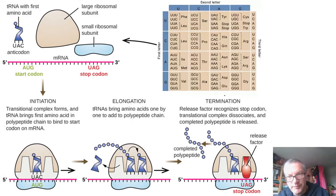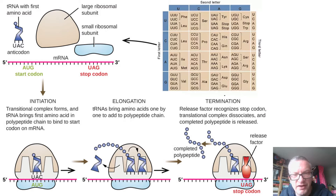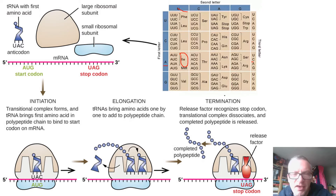We began the session by talking about the code contained within messenger RNA, and I showed you this diagram — the codon dictionary. We talked about how to read it: messenger RNA is read in threes called codons. The first, second, and third position of the three letters tells you which amino acid is added to the growing polypeptide chain.